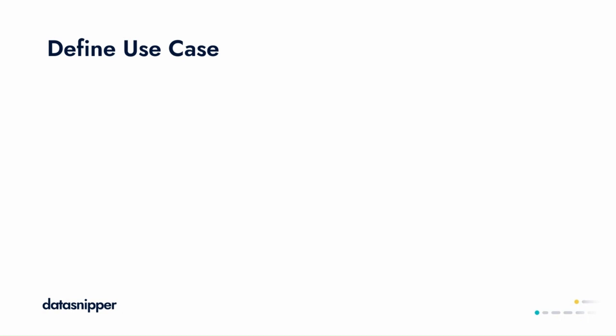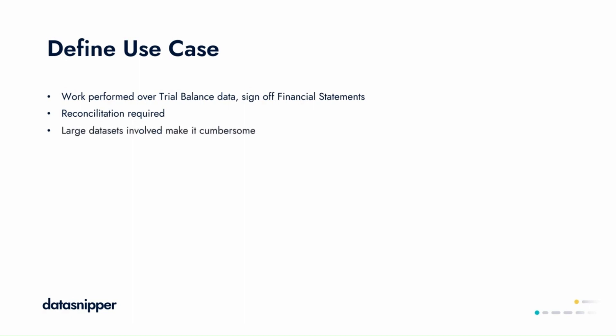Audit work is typically performed and scoped based on trial balance data, but the sign-off is on the financial statements, therefore a reconciliation between the two is required. The issue with this is that sometimes the trial balance is provided in an unhelpful format and it's usually a large data set which can be cumbersome to work with.